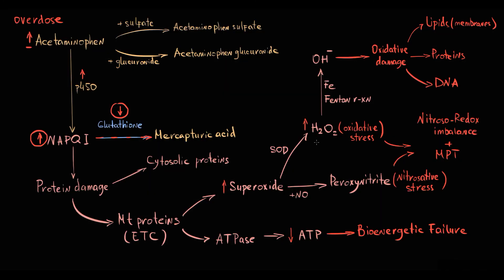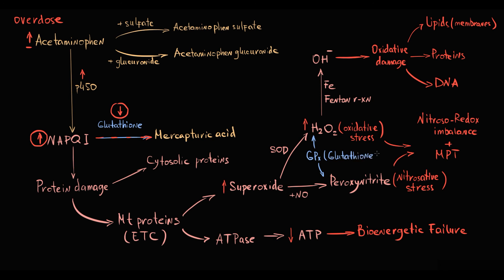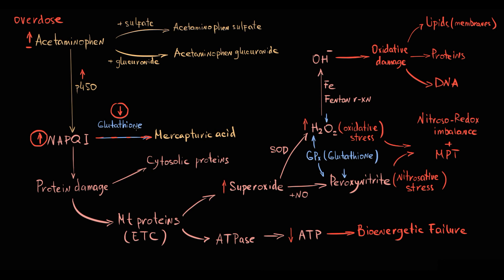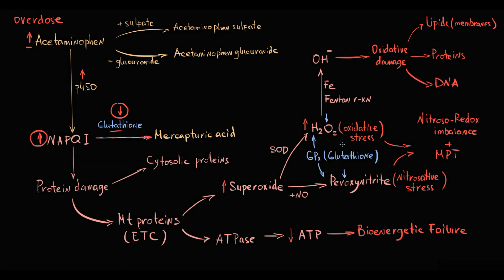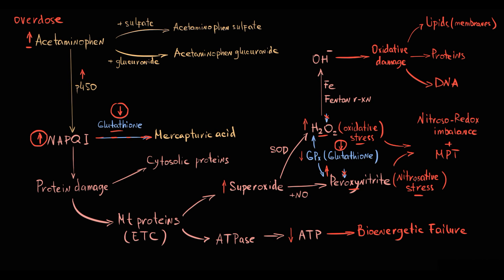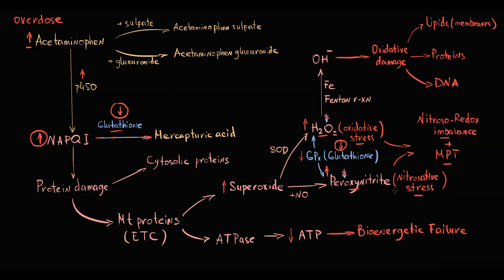Oxidative stress and nitrosative stress thus induce nitroso-redox imbalance and mitochondrial permeability transition. For proper intracellular signaling, the levels of hydrogen peroxide and peroxynitrite must be strictly controlled. The cell has a specific antioxidant called glutathione peroxidase that detoxifies both hydrogen peroxide and peroxynitrite, and its critical cofactor is glutathione. In acetaminophen intoxication, when glutathione stores are already depleted, there is no glutathione available for glutathione peroxidase — causing progressive increase in hydrogen peroxide and peroxynitrite, severe oxidative and nitrosative stress, nitroso-redox imbalance, and mitochondrial permeability transition.